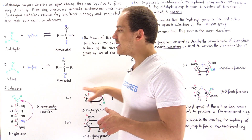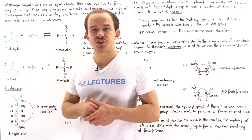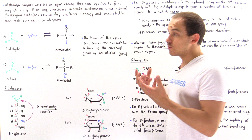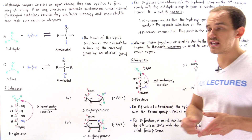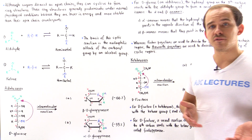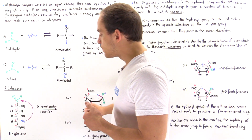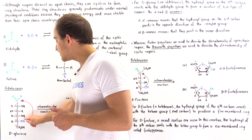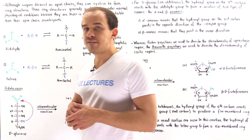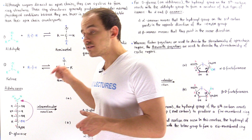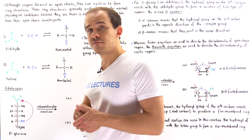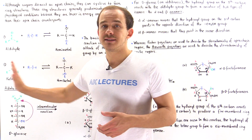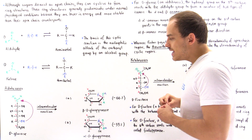Let's begin by focusing on aldohexoses. The aldohexose we're going to use as our prototypical example is glucose — more specifically, D-glucose. D-glucose simply means this blue hydroxyl group found on the last stereogenic carbon, carbon number 5, points to the right side and not to the left side.